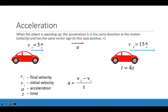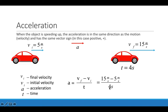Here we have an example where a car is speeding up. The car starts with an initial velocity of positive 5 meters per second, pointing to the right. The final velocity is 15 meters per second, also to the right, and the time interval is 4 seconds. So the acceleration is the final velocity of 15 minus the initial of 5, divided by 4 seconds, giving us 10 meters per second over 4 seconds, which is 2.5 meters per second squared. This positive value means the acceleration vector is pointing to the right.